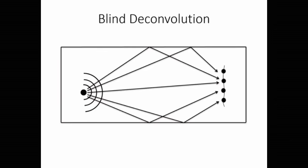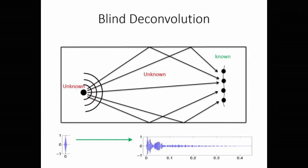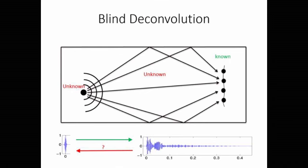In blind deconvolution, we have a sound source which is unknown. It broadcasts a signal that propagates through an unknown environment, and we receive it by a single receiver or an array of receivers. Blind deconvolution uses the received signal to go back and recover the source signal. Synthetic time reversal is a blind deconvolution technique used for recovering the source signal. Before talking about synthetic time reversal, I want to talk about time reversal itself.